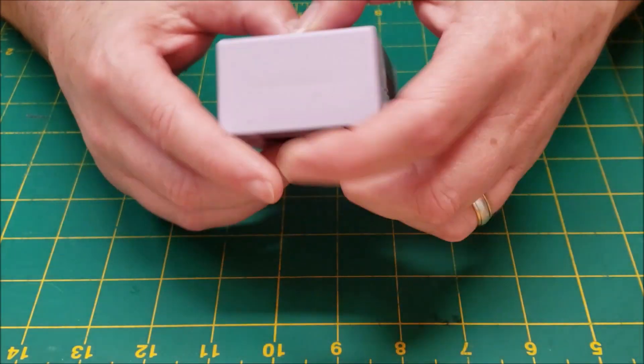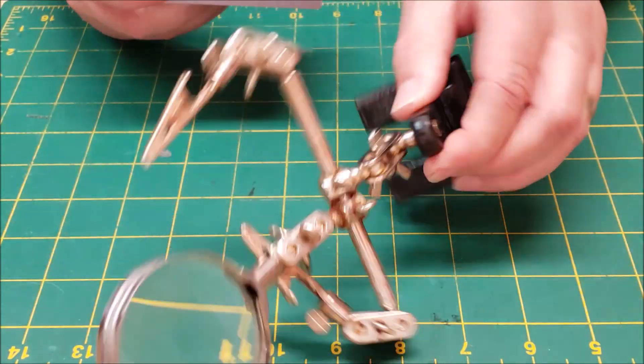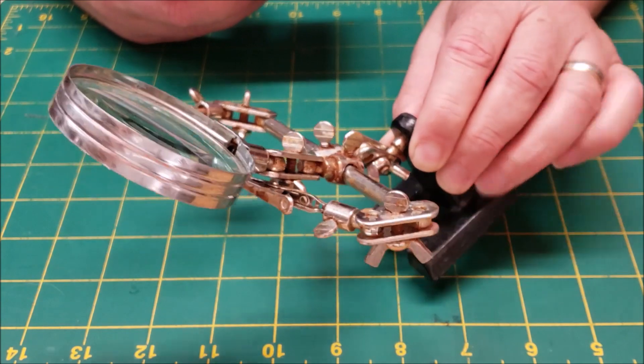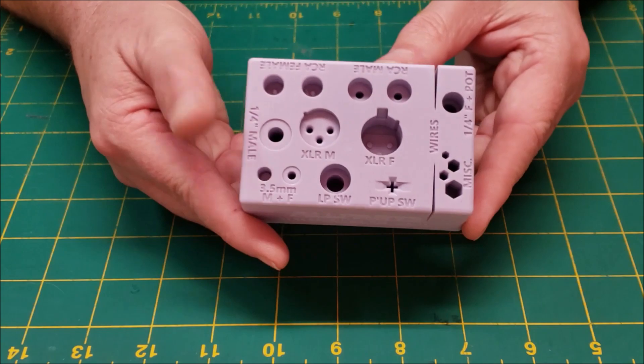This is the hot holder from all parts. It replaces those janky third hands that tip over, scratch parts, crush the insulation, and suck out the heat from your soldering iron. The hot holder solves all of those problems.